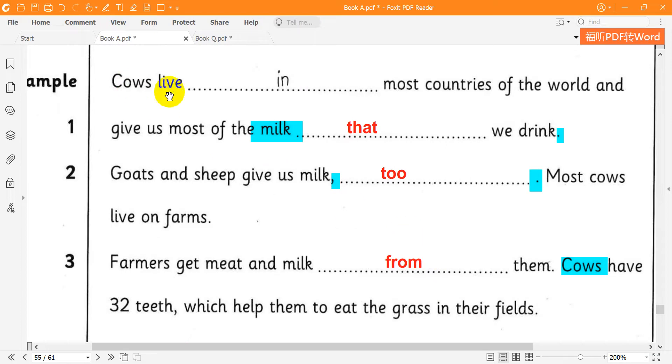Cows live in most countries of the world and give us most of the milk that we drink. Goats and sheep give us milk too. Most cows live on farms. Farmers get meat and milk from them. Cows have 32 teeth,